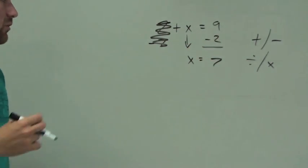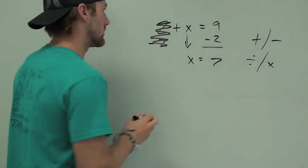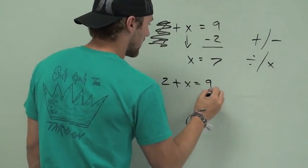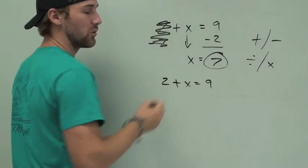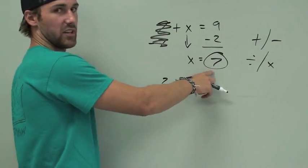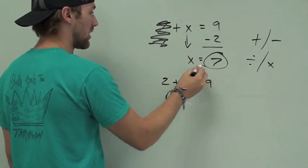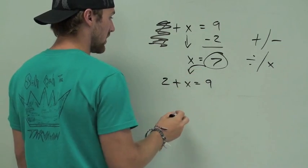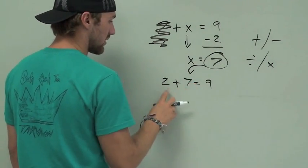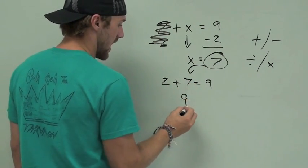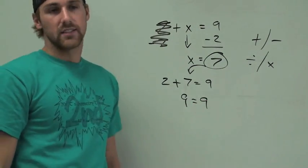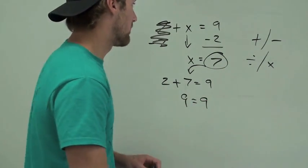Here's the wonderful thing about these — you can always check your answers. Our original problem was 2 plus x equals 9. To check it, we just plug in what we said x was. If we're saying x is equal to 7, we can plug them in and change them. So we take out x and put in 7. 2 plus 7 is 9. Does 9 equal 9? Why, yes it does. Good deal, move on.